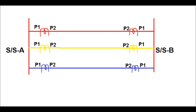The CT should be connected with proper polarity in each substation. A transmission line is connected between substation A and substation B. P1 is connected on the bus side of substation A. Similarly, P1 in substation B is connected on the bus side, and P2 should be connected on the line side, that is, towards the line direction.